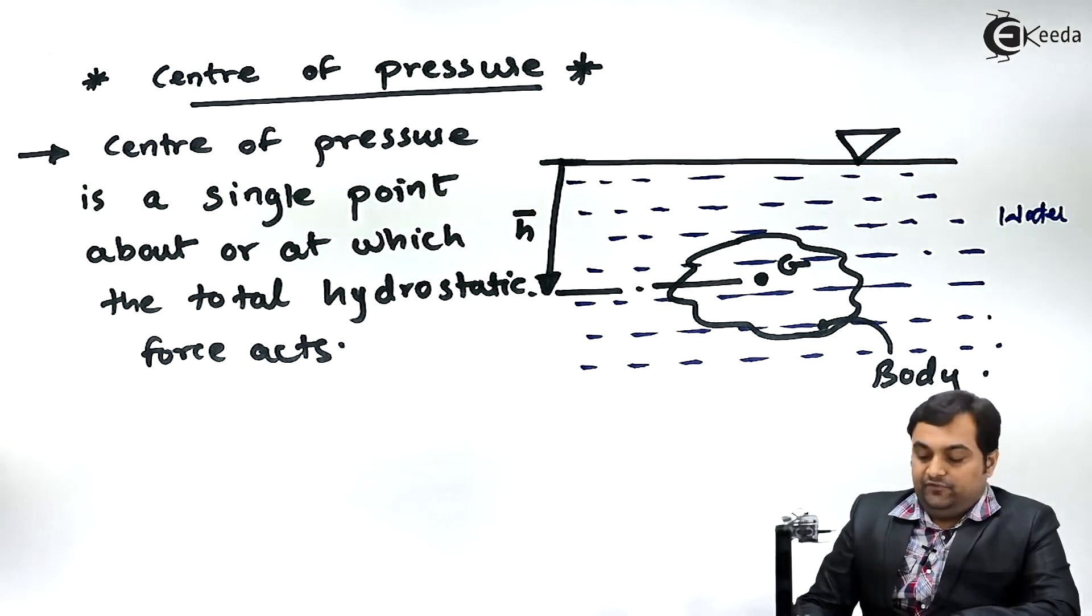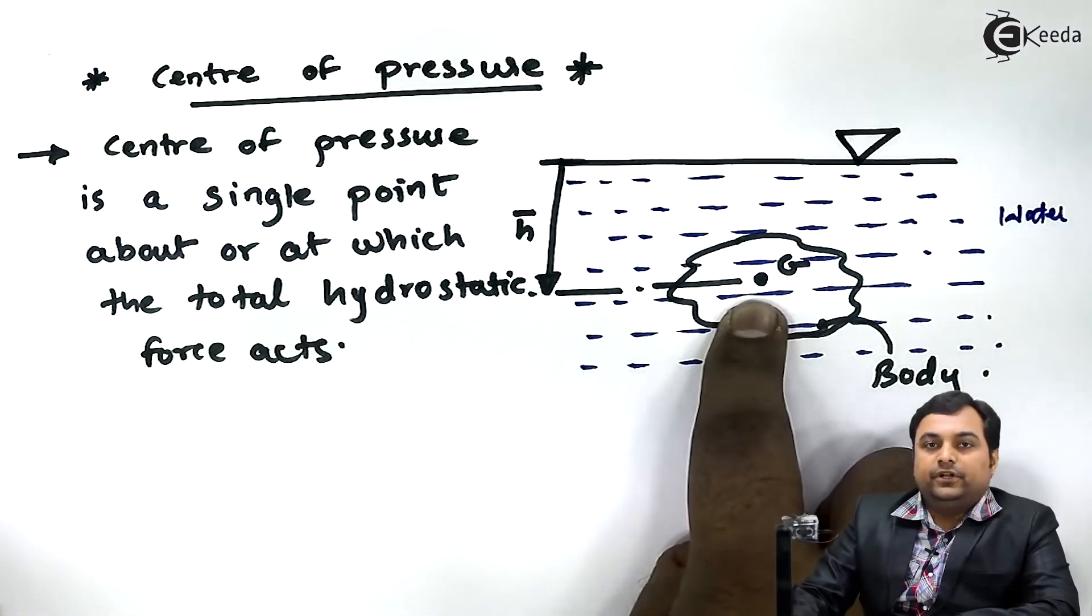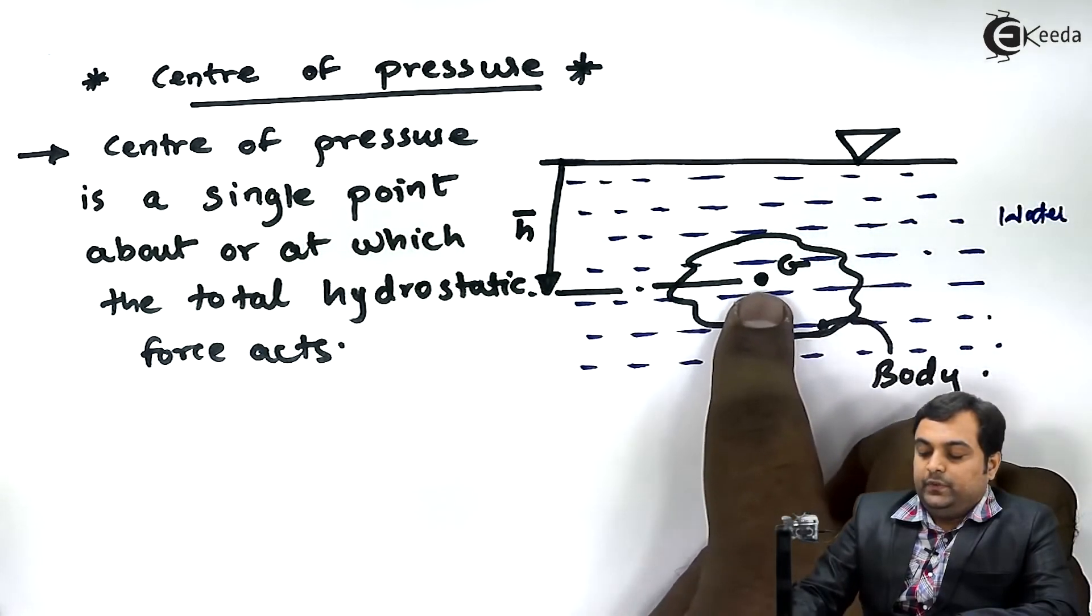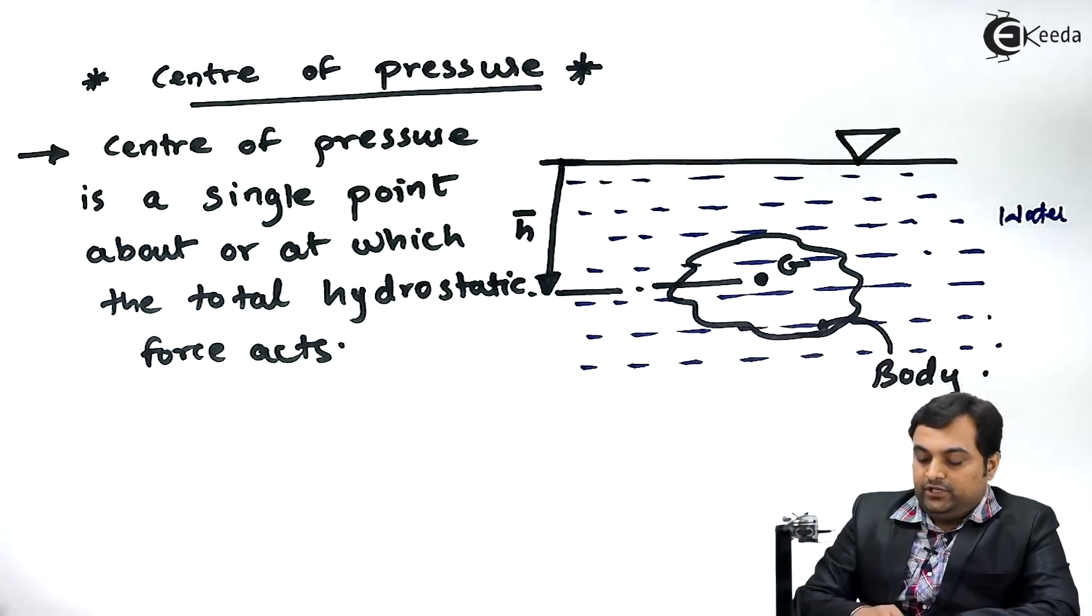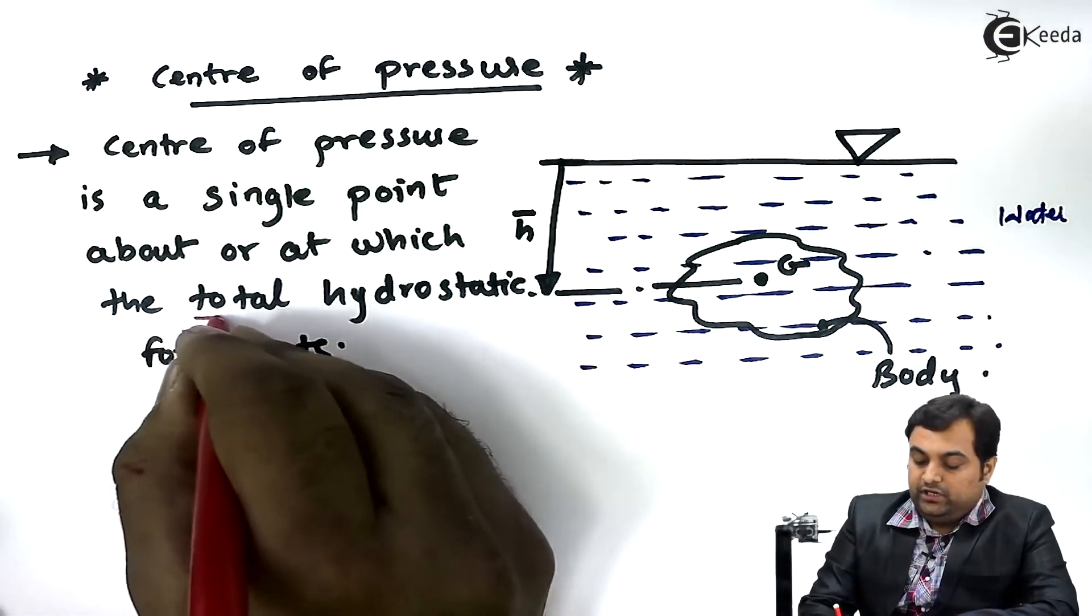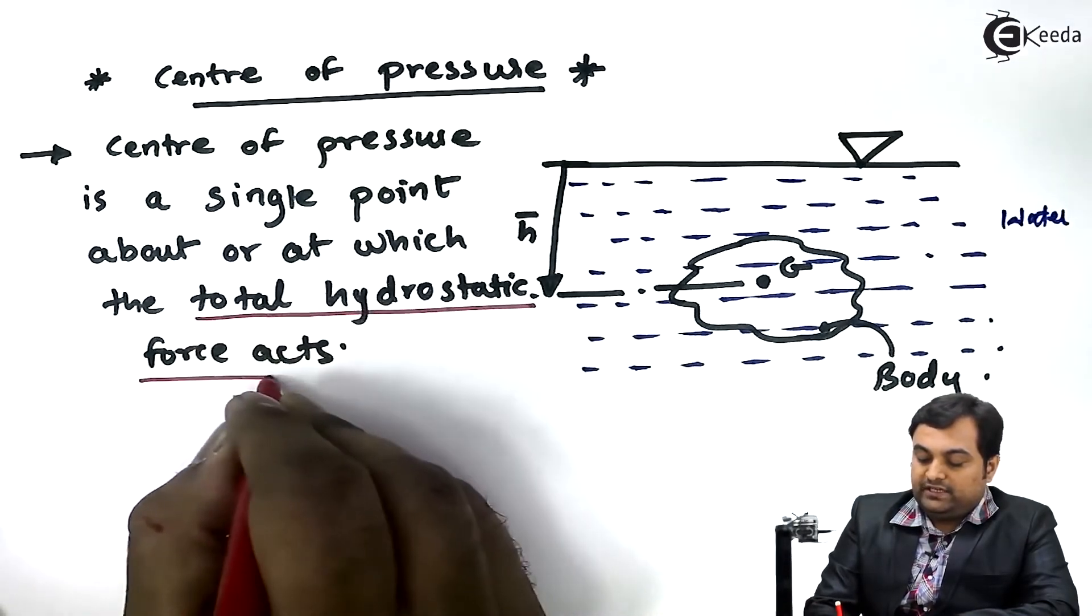So center of pressure means it will be a single point, like centroid is a single point over which we have calculated where the weight is acting of the body. Center of pressure is a single point about or at which the total hydrostatic force acts.